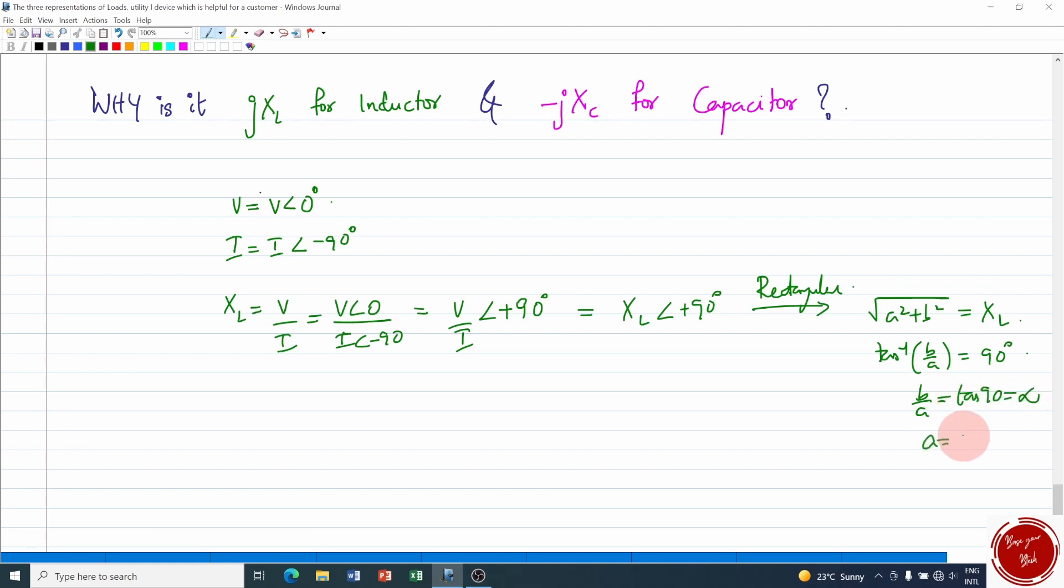Substituting a = 0 over here you get √(b²) = XL or b = XL. Now the expansion a + jb becomes simply 0 + jXL or it is simply jXL in the case of inductor.